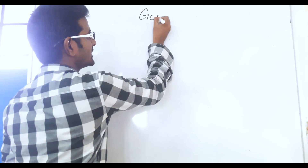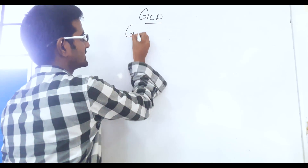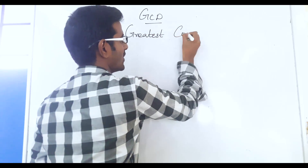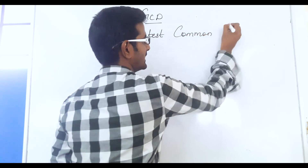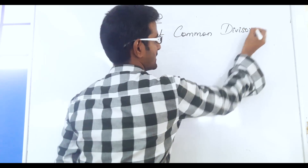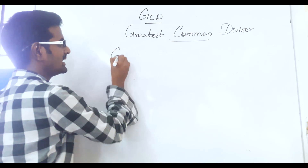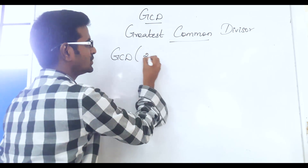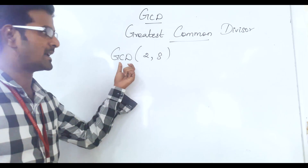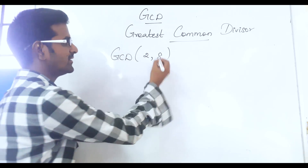GCD stands for greatest common divisor. For example, let us take GCD of 2, 8 — a simple example. How do we calculate the GCD of 2, 8?